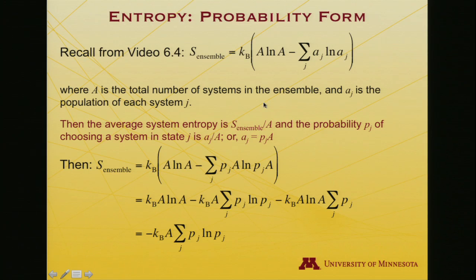Let me substitute those expressions into the ensemble entropy. That is, I'll go from little a's to little p's times capital A. I'll expand this out a bit. So multiply through Boltzmann's constant times a log a minus k a. Log of a product is a sum of logarithms. And so I'll get a p log p term and I'll get a log a term.